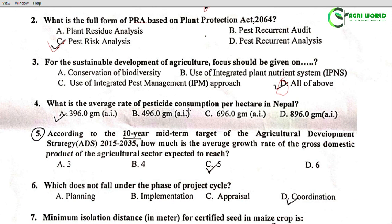Question 4: What is the average rate of pesticide consumption per hectare in Nepal?